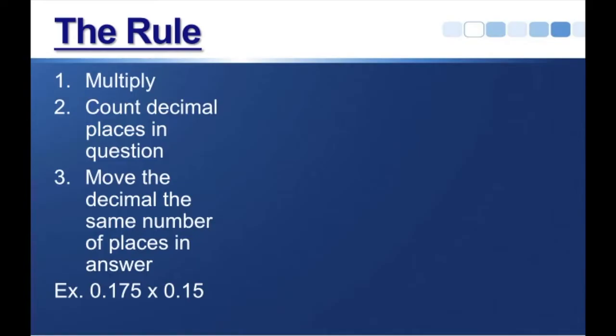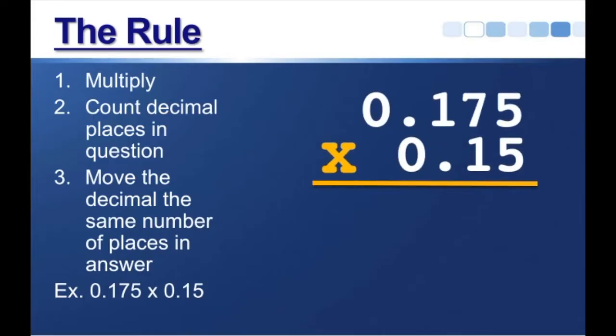So how about this example? 0.175 times 0.15. Well, let's start with writing it down, and then step one is just to multiply, just like we normally would. We've got 5 times 5 is going to be 25, bring down the 5, carry the 2. Then we've got 7 times 5 is 35, plus 2 is 37, bring down the 7, carry the 3. 5 times 1 is 5, plus 3 is 8, so we'll put the 8 right down there, and then 5 times 0 is just 0.